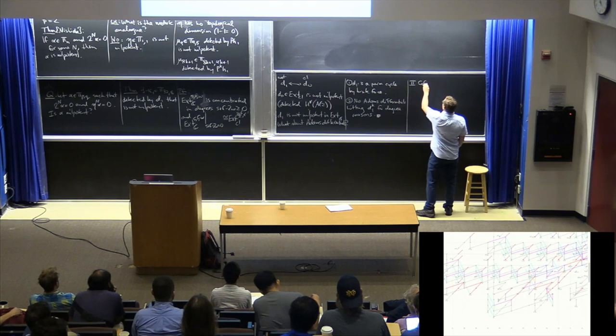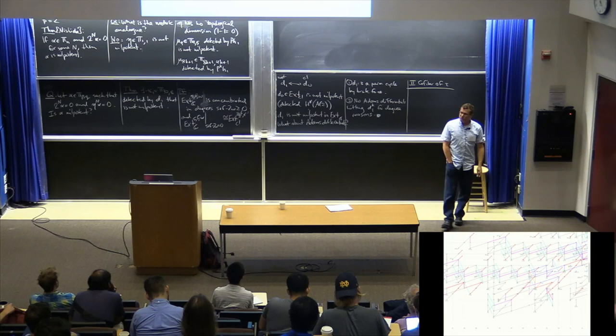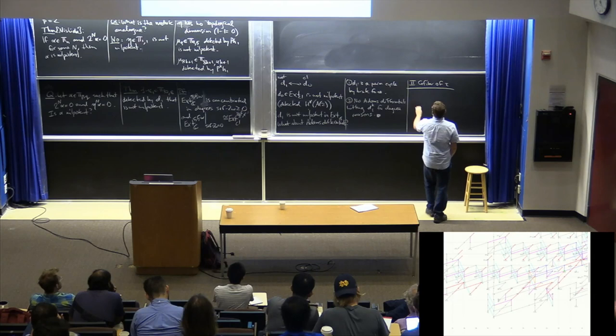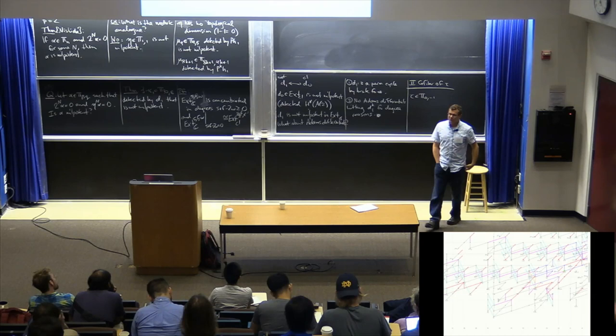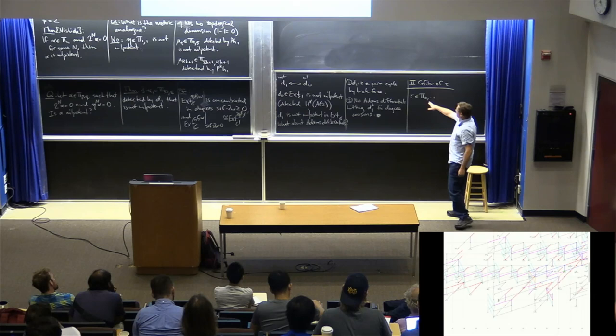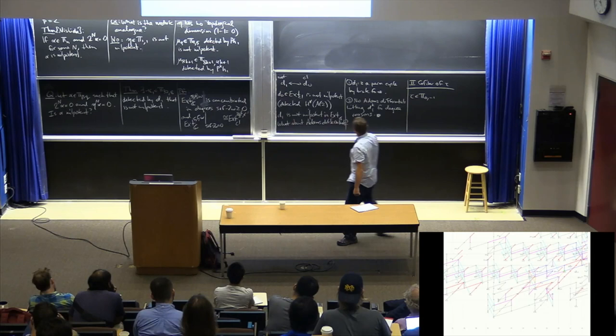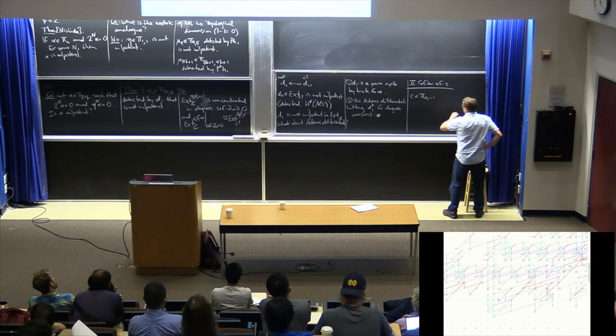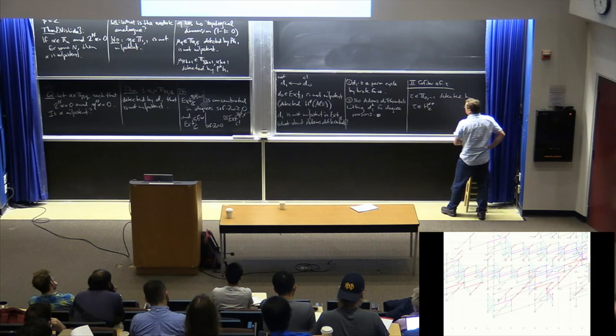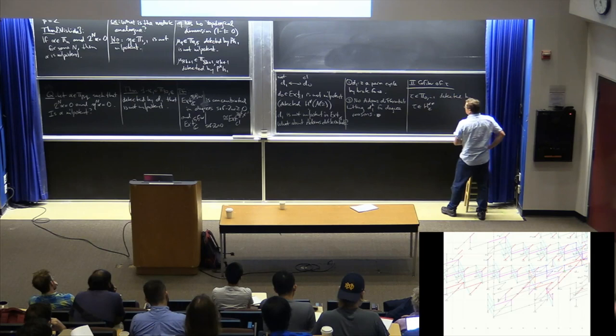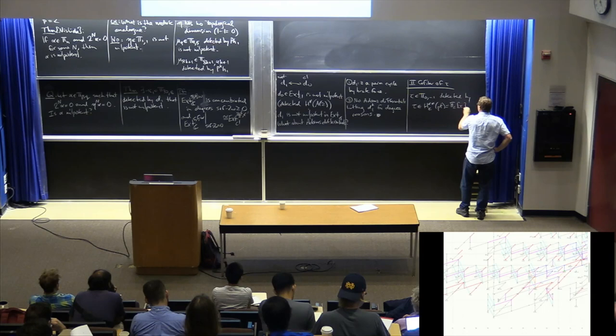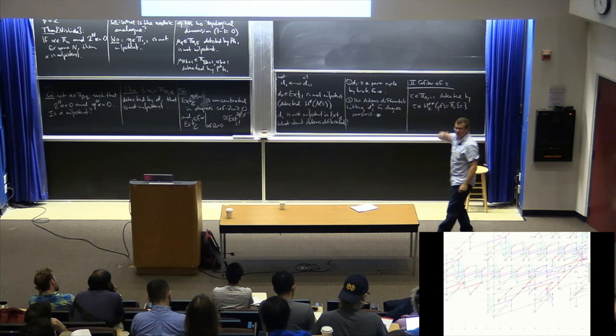This is Part Two: cofiber of tau. There's an element in pi_{0,−1} — this is in what we think of as the motivic zero stem, all the way on the left side of an Adams chart but with a funny algebraic twist. There's an element called tau, detected by an element tau in the motivic cohomology of a point, which turns out to be F_2[tau]. So tau is in Adams filtration zero — it's detected directly in cohomology.